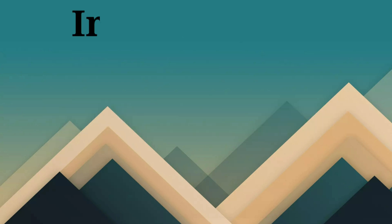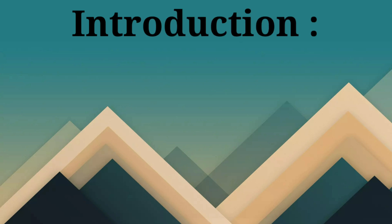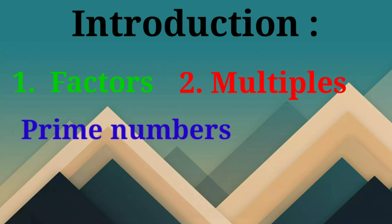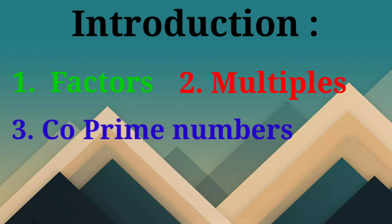This exercise will deal with three terms. The first term is what are factors, the second term is what are multiples, and the third term is what are co-prime numbers. The first two terms we have already discussed in Exercise 3.1 and we have done equations related to that, so those terms I'm not going to discuss again.